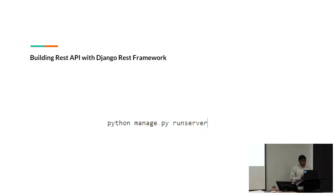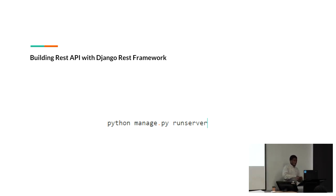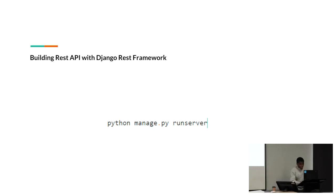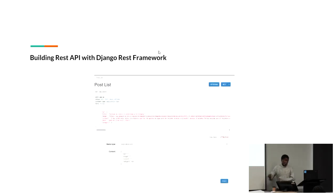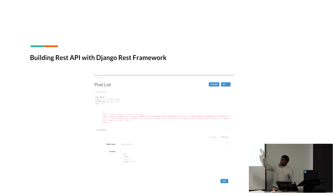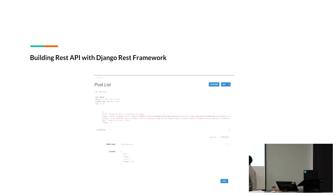After that, what you have to do is run your server to check if everything is working perfectly. For running our server in Django, we use python manage.py runserver. When you use your browser and assess localhost:8000/api/posts, it's going to return this structure for you.